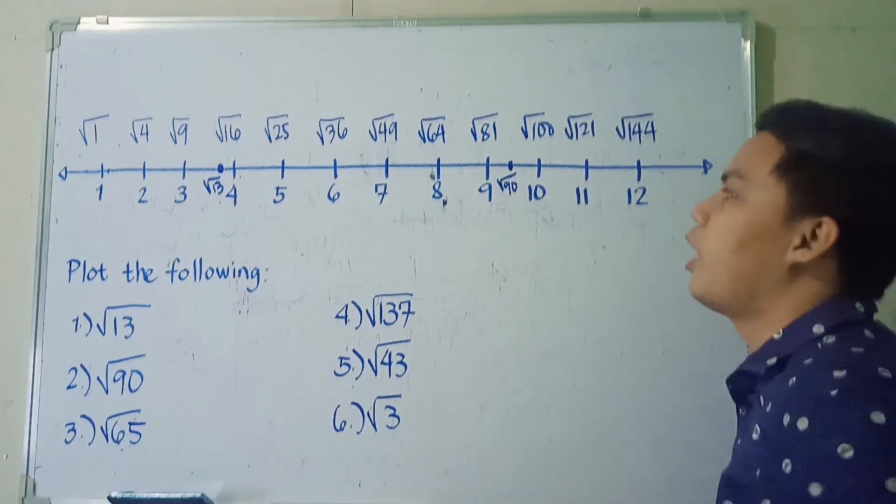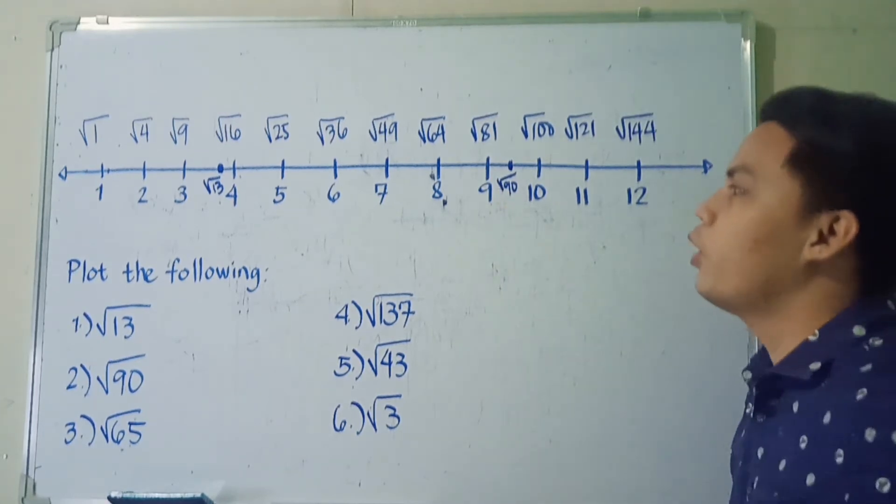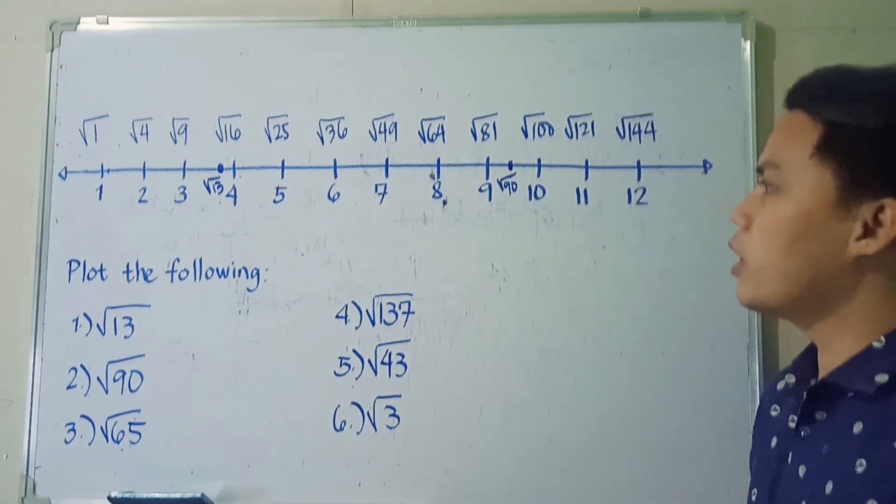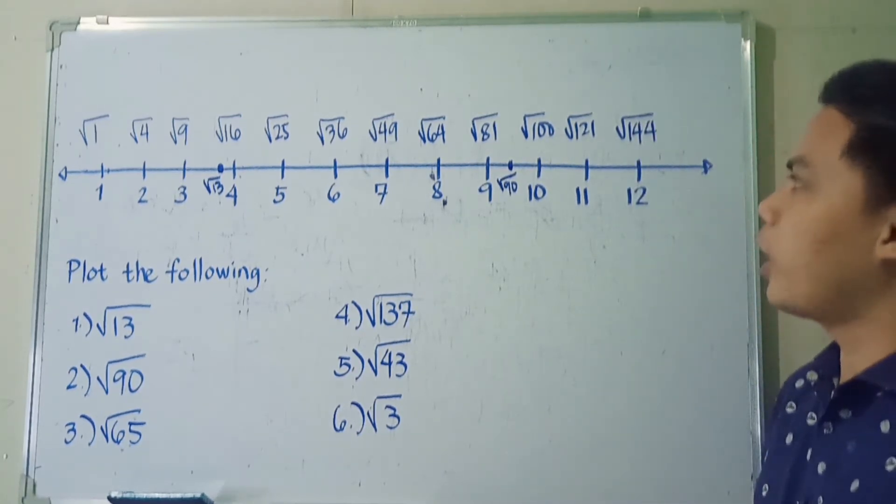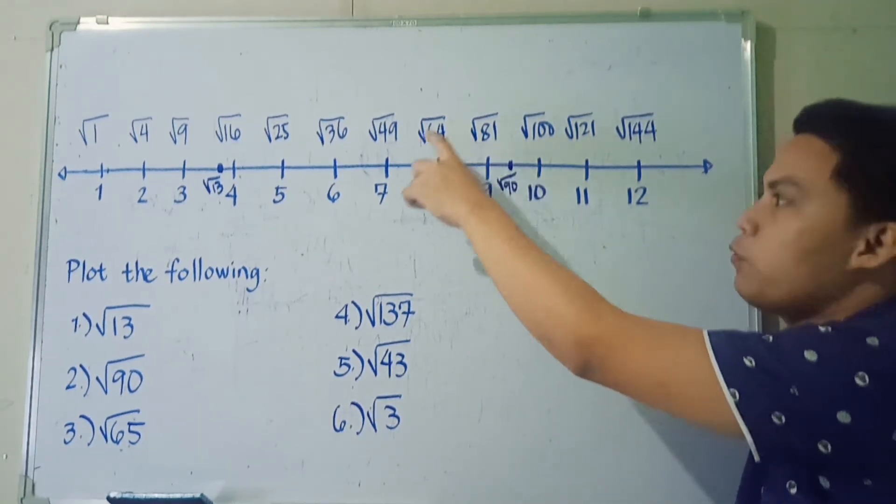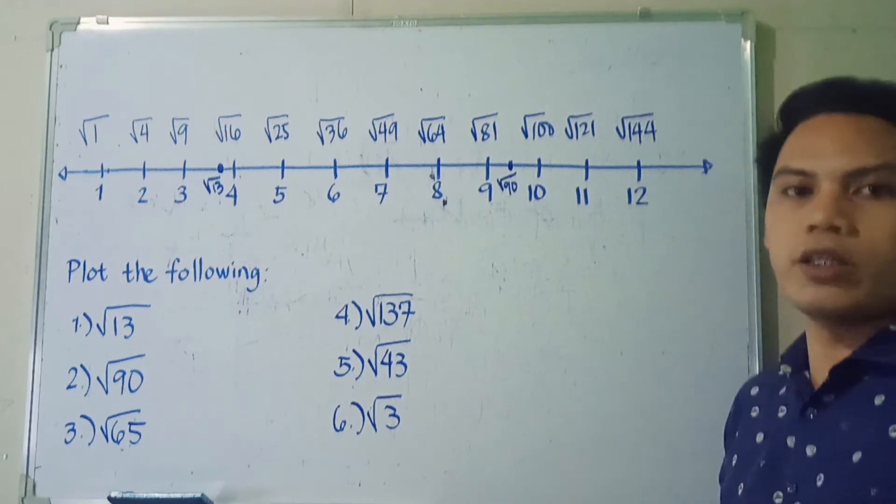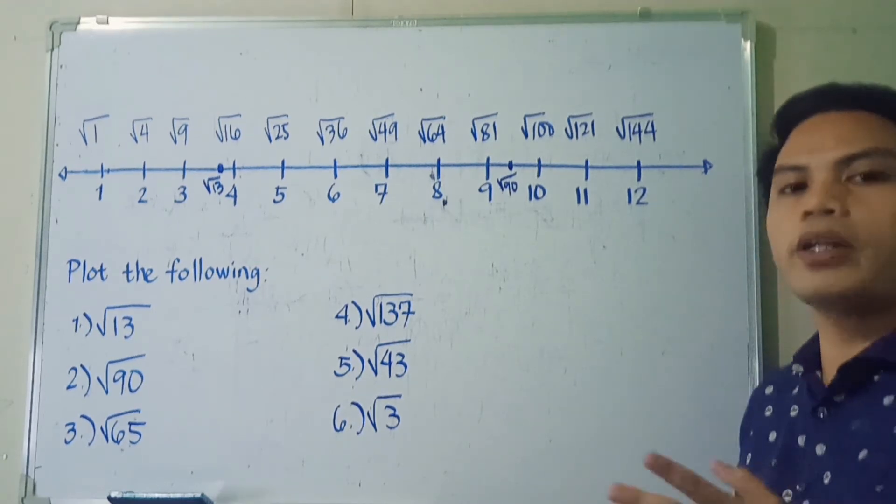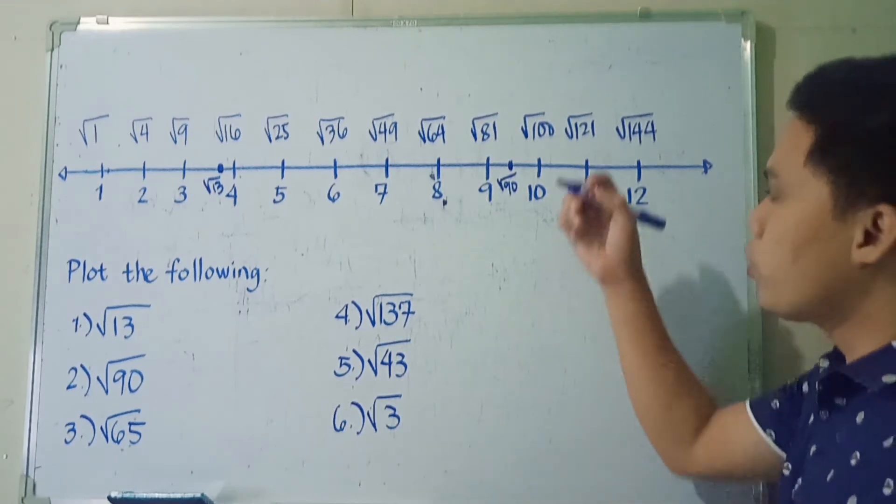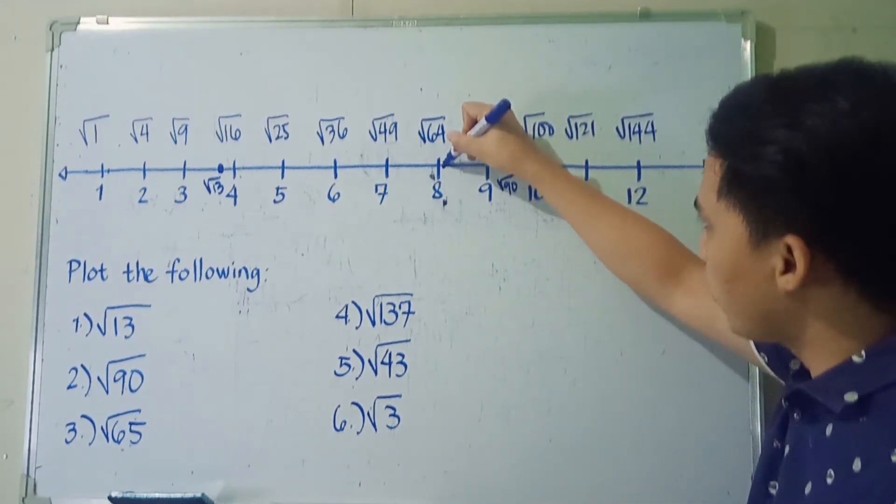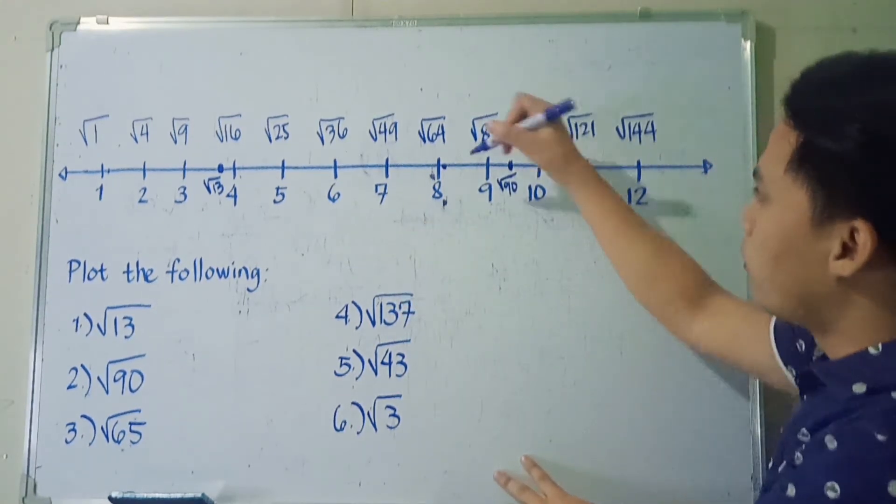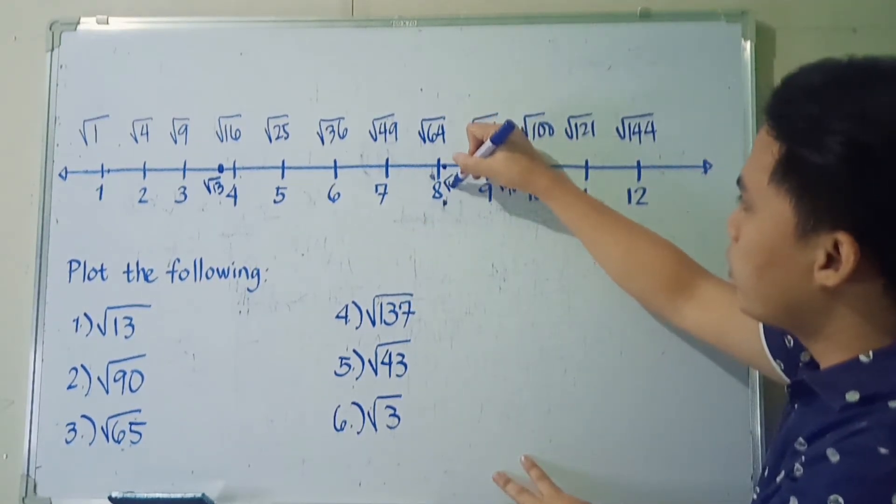Sorry for the smaller writings. Next would be square root of 65. 65 is between the two perfect squares 64 and 81. And of course, it's closer to 64, just one number away to reach 65. So square root of 65, we'll place it here almost touching 8. So we're going to write here square root of 65.